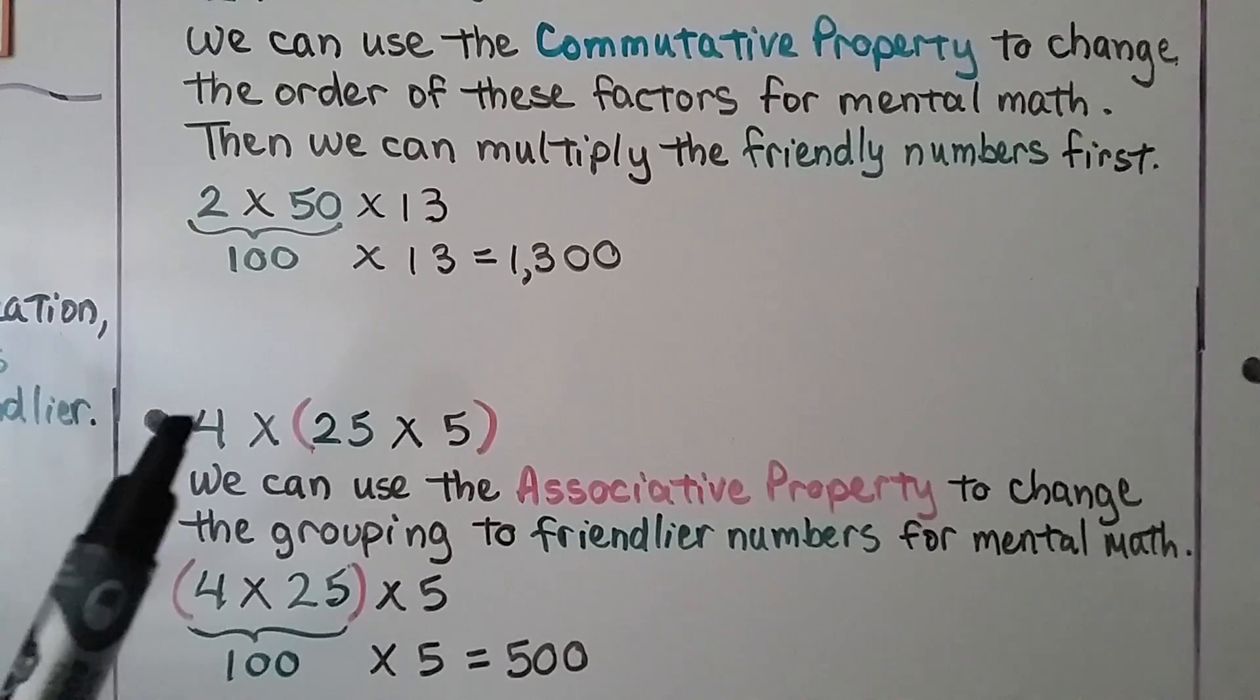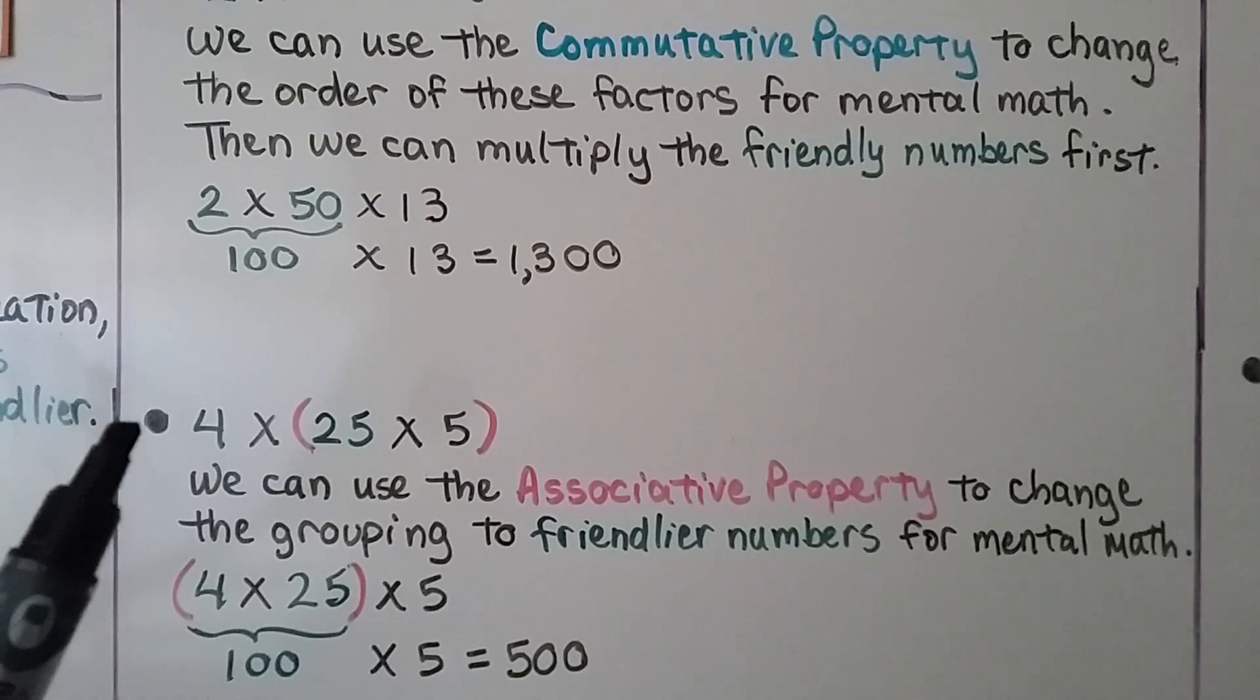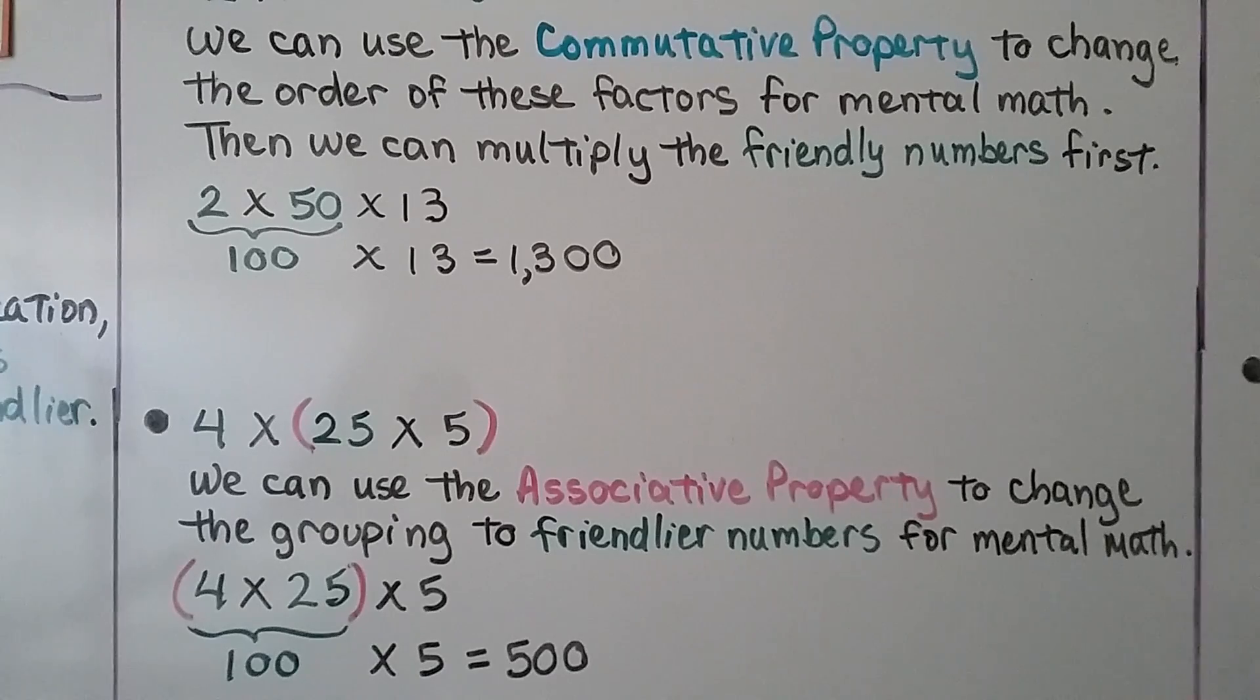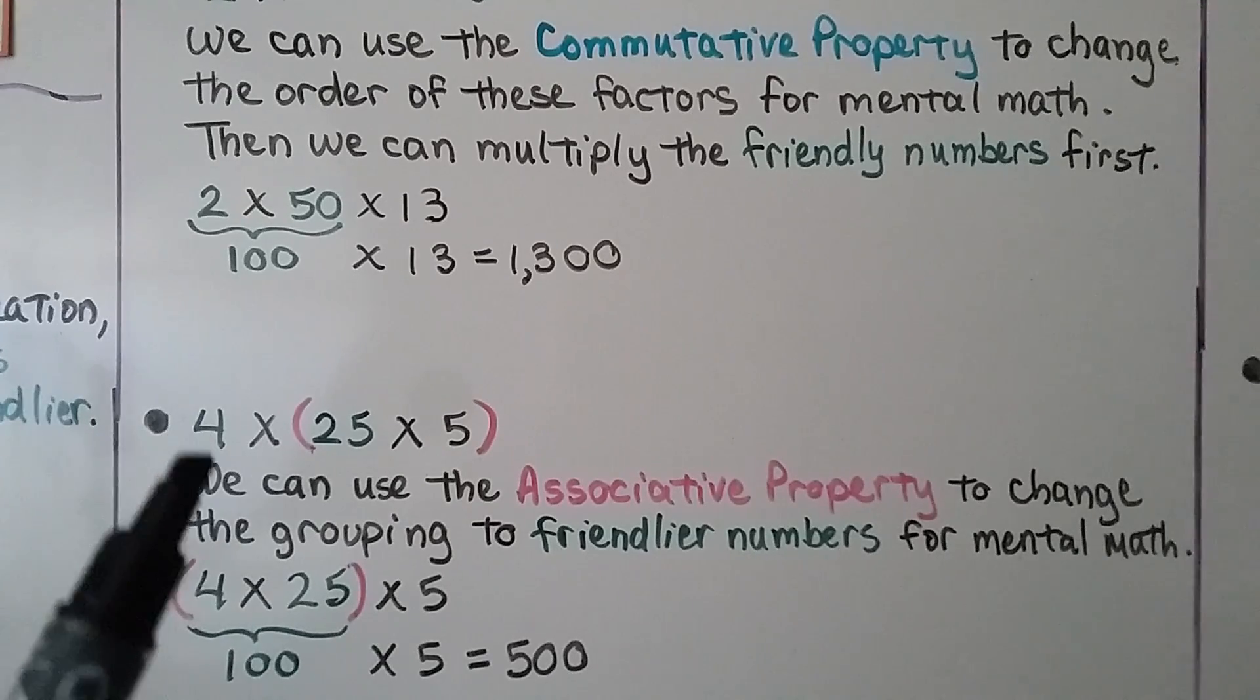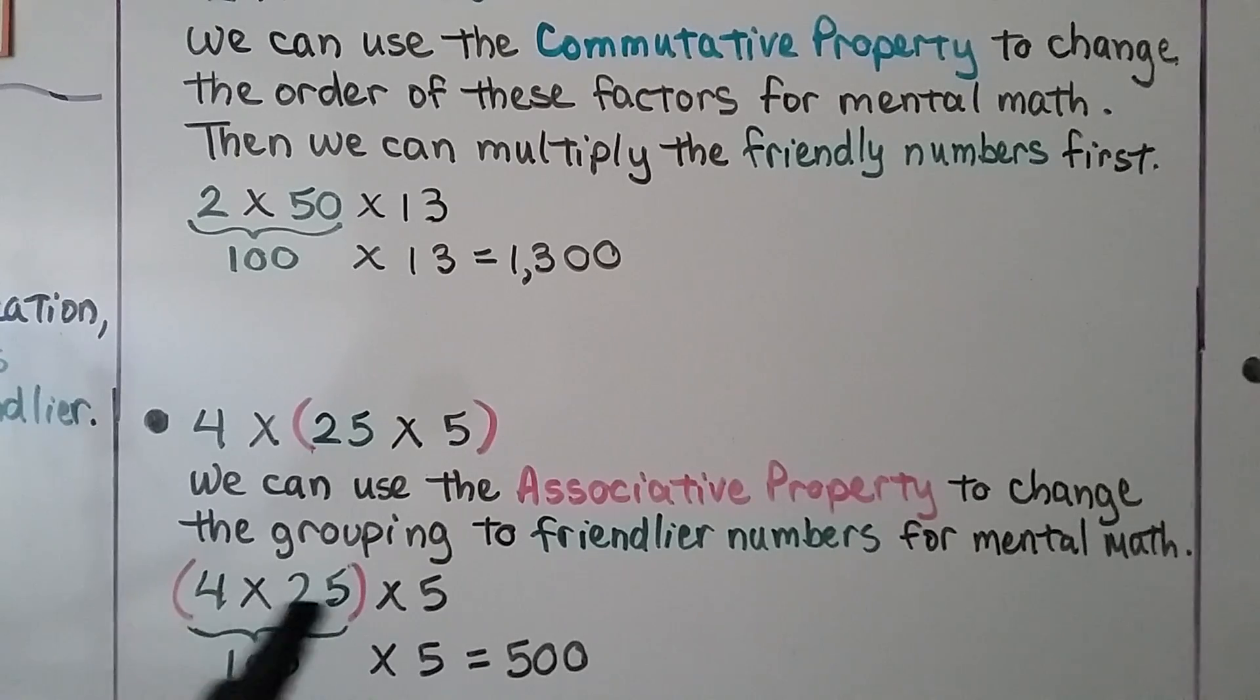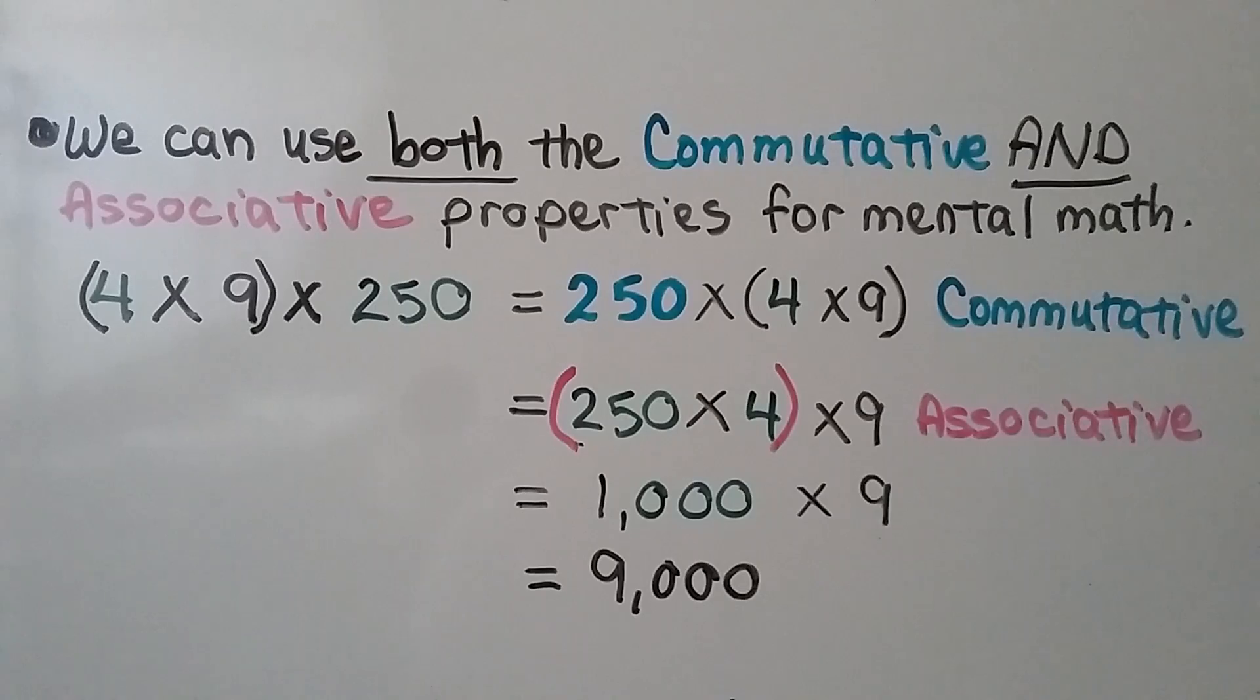For this equation, we can use the associative property to change the grouping to friendlier numbers for mental math. We have 4 times 25 times 5. We can change the grouping to 4 times 25, that's 100, then we can multiply it times 5 and we'll get 500.